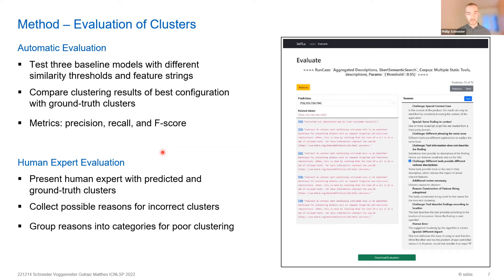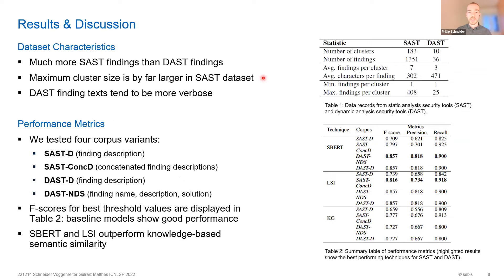Coming to the results: with our seven static analysis tools we generated 1,351 findings, and with our two dynamic analysis tools we had 36 findings. The number of findings influences the maximum findings per cluster, which is way higher for the SAST dataset and lower for the dynamic analysis. However, the average findings per cluster is more comparable — around three for the DAST dataset and around seven for the SAST dataset.